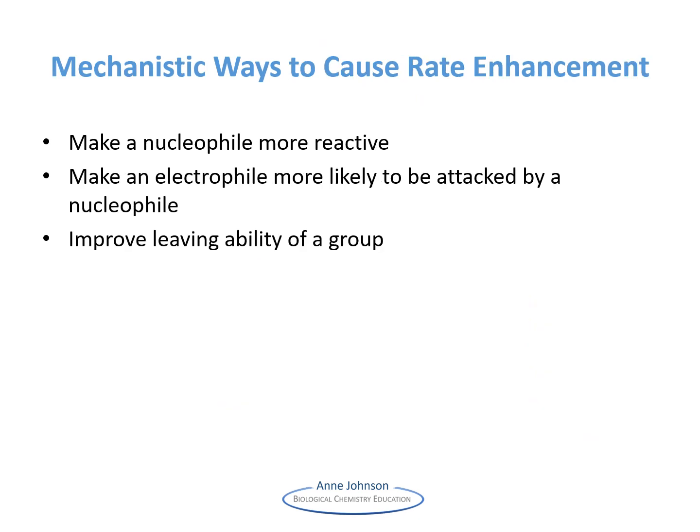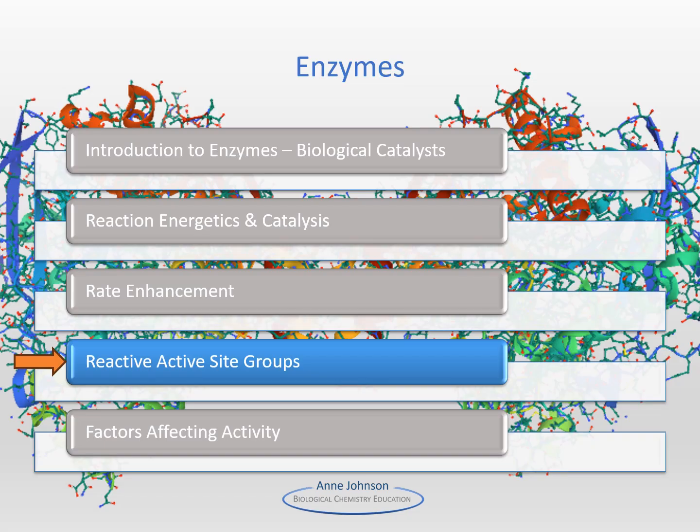There are also some mechanistic ways that enzymes use to cause rate enhancement. These include improving the nucleophilicity of active site residues, the electrophilicity of substrates, and the leaving group ability of substrate groups. Next time, we'll have a look at the reactive groups in enzymes.